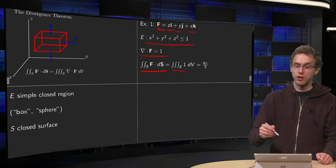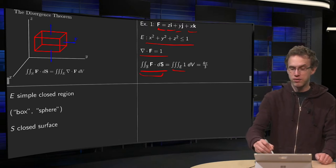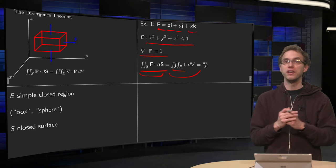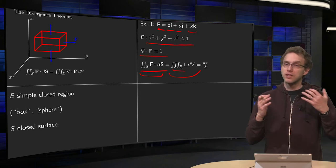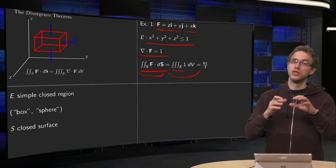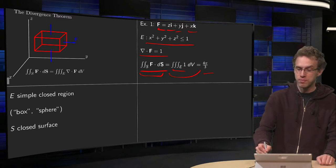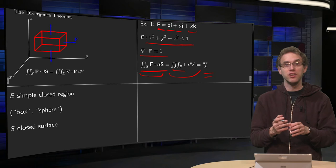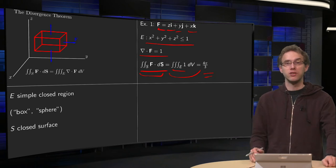So the Divergence Theorem tells us that this flux equals the triple integral of one dV. And that triple integral is just the volume of our solid, which is the unit sphere, so that is four pi over three. So with the Divergence Theorem you can compute this integral straight away.